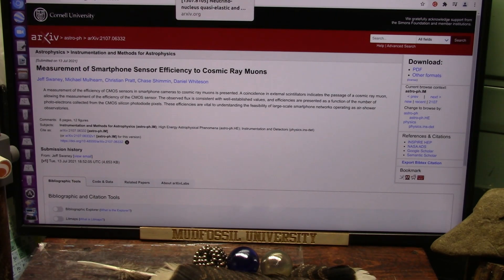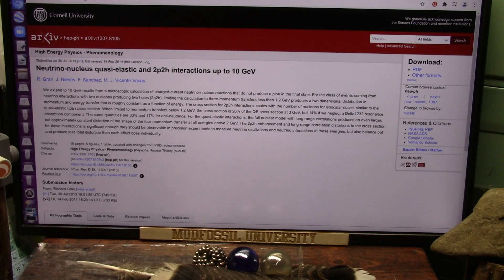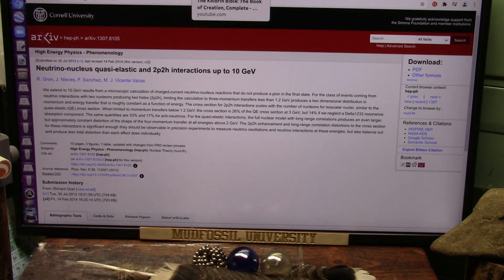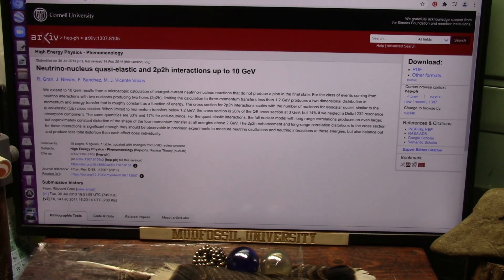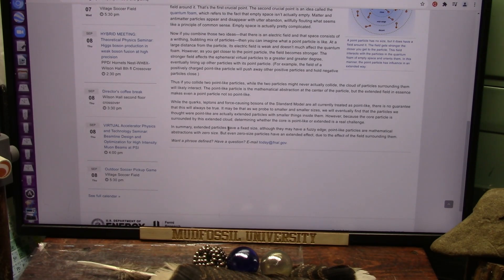That's what cell phones do. They're using cell phones to do the biggest cosmic ray experiment in the world. So I can easily see these particles, and they're the ones that Don Lincoln shows here, the fixed and the point. And he says, to sum it up, in summary, the extended particles have a fixed size. That's the big black one, although they may have a fuzzy edge.